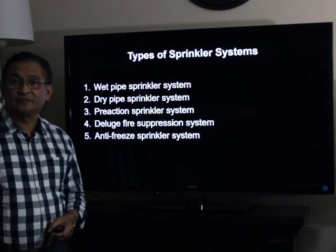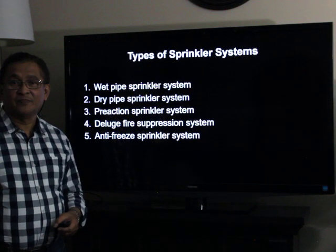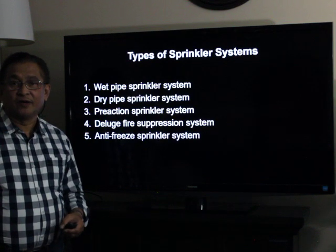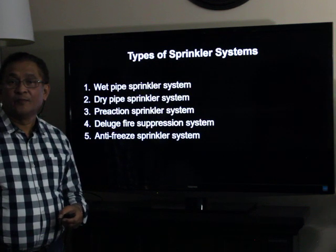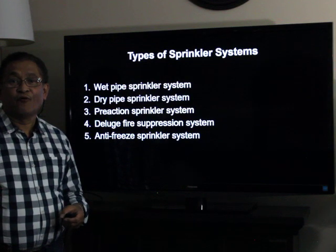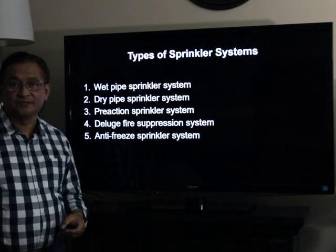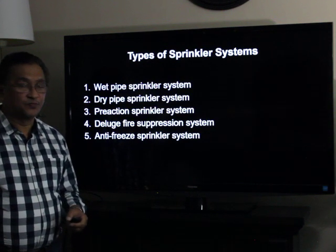The first one is the wet pipe sprinkler system, the second one is the dry pipe sprinkler system, the third one is the pre-action fire sprinkler system, the fourth one is the deluge fire suppression system, and the fifth one is the anti-freeze fire sprinkler system.